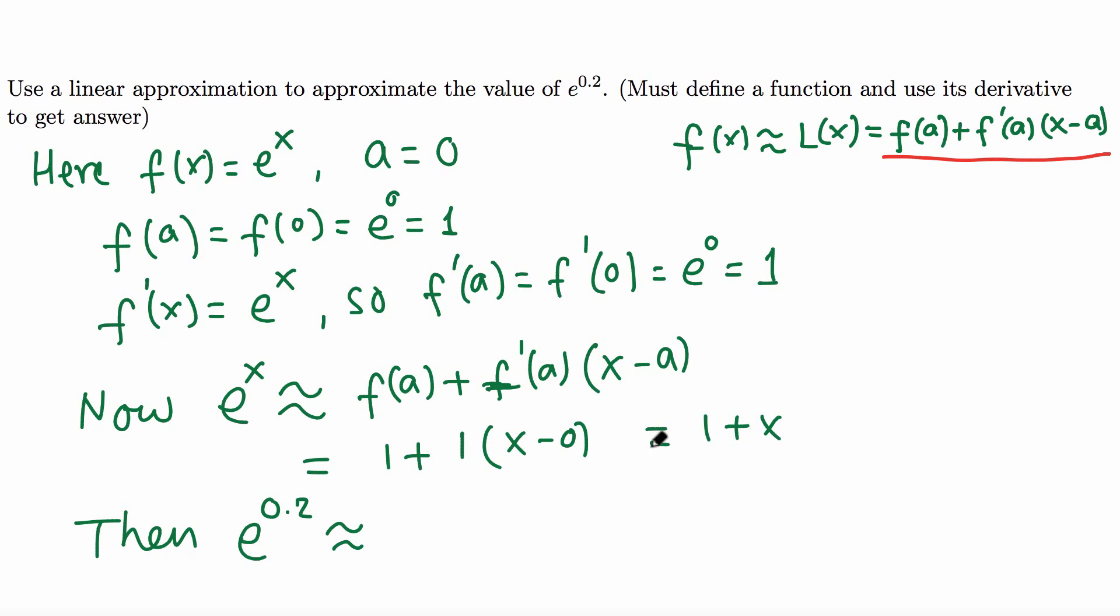So we replace x by 0.2. Then e raised to 0.2 is almost equal to 1 plus x, where x is 0.2. 1 plus 0.2, that's 1.2. So e raised to 0.2 is approximately equal to 1.2.